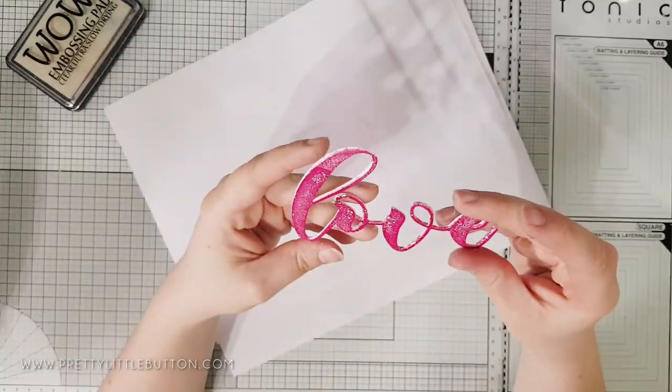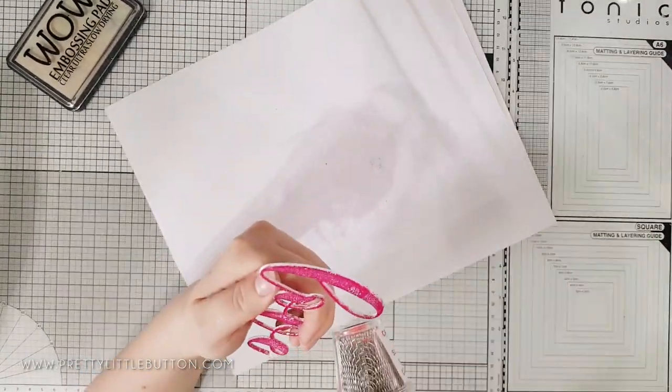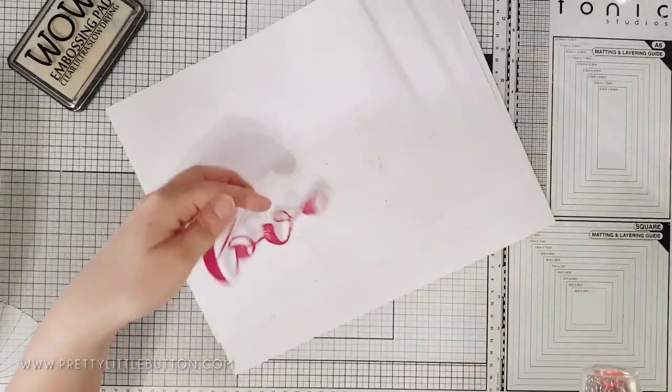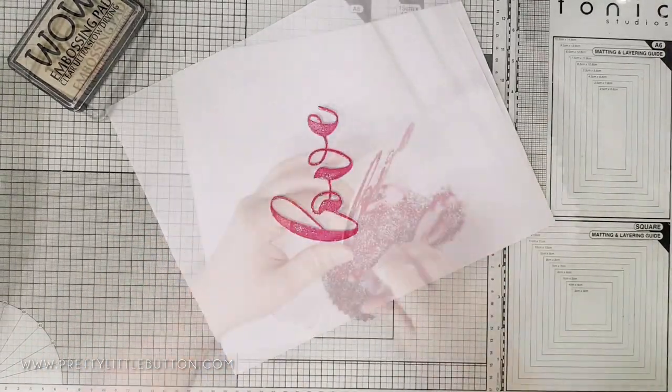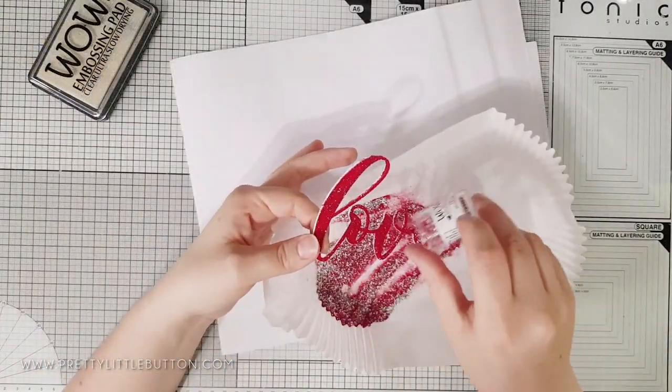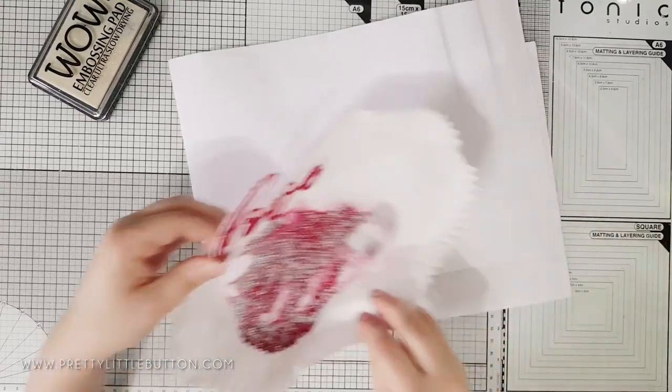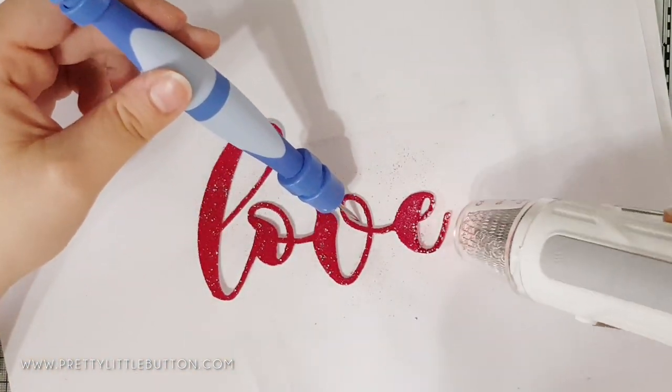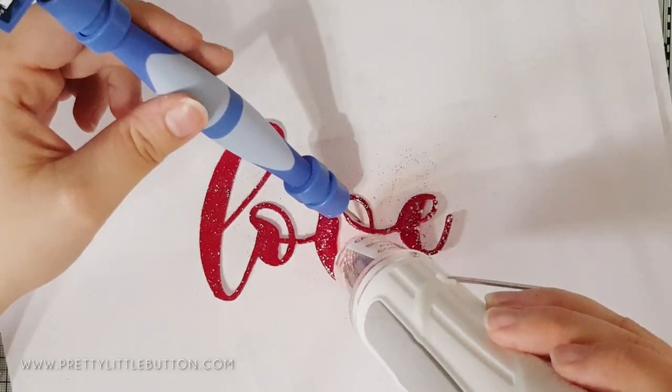The first powder I'm using is the Fizz color blend from the Confetti Trio. This has a beautiful red pink base to it with large chunks of white and silver powder mixed in. So as the chunky powder melts you get a speckled look to the embossing.